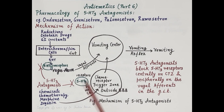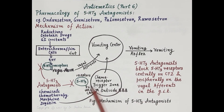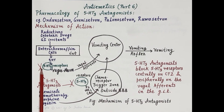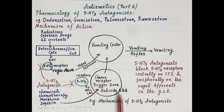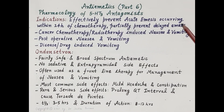As shown in this diagram, 5-HT3 antagonists block centrally located 5-HT3 receptors on the chemoreceptor trigger zone, and peripherally they block 5-HT3 receptors located on the vagal afferents. Thus, these drugs produce a potent antiemetic effect.